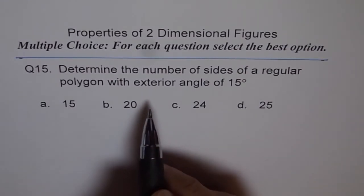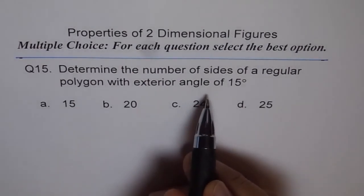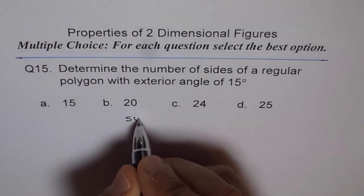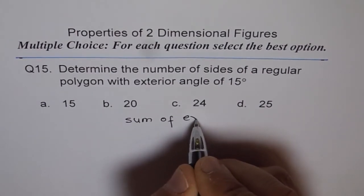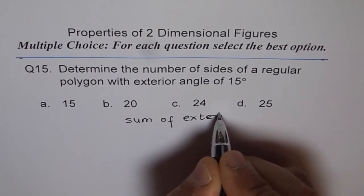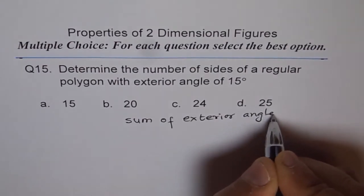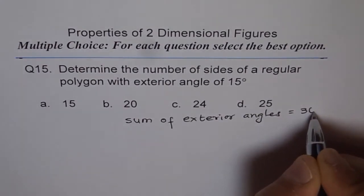Now, do you know what is the sum of exterior angles? Sum of exterior angles is 360 degrees. Always. Is 360 degrees.